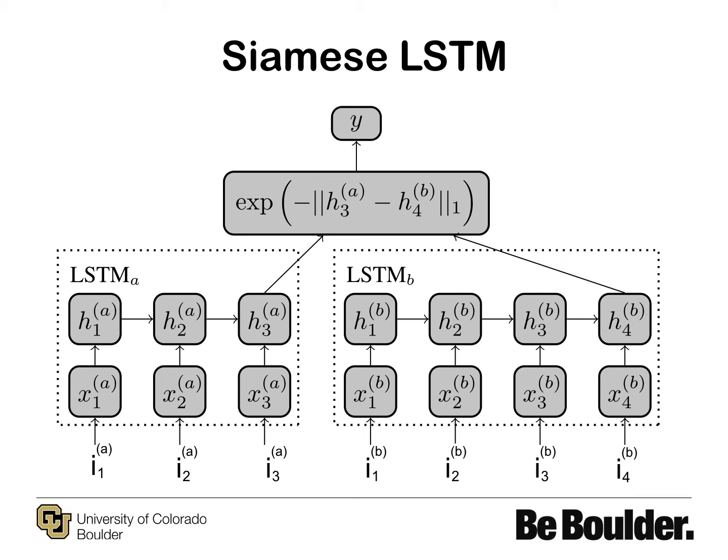The LSTMs handle time series data as shown in the figure here — inputs i1, i2, i3, i4 — these are two separate inputs fed to each neural network at given time steps.